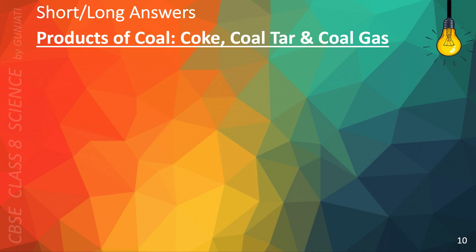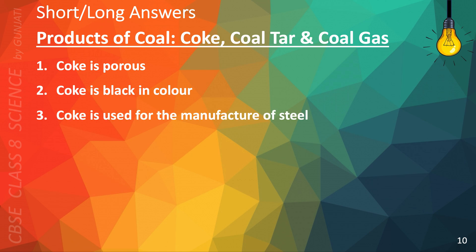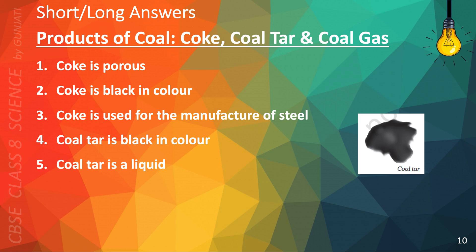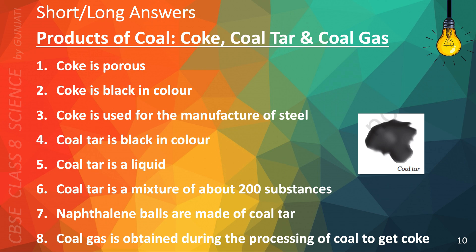The following points will help you answer questions on products of coal, coke, coal tar, and coal gas. Coke is porous. Coke is black in color. Coke is used for the manufacture of steel. Coal tar is black in color. Coal tar is a liquid. Coal tar is a mixture of about 200 substances. Naphthalene balls are made of coal tar. Coal gas is obtained during the processing of coal to get coke.